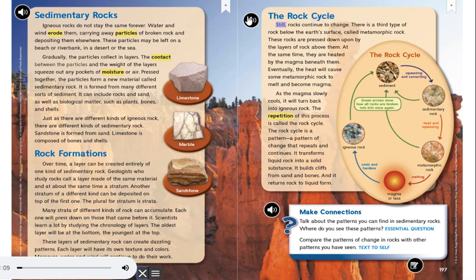The Rock Cycle. Still, rocks continue to change. There is a third type of rock below the Earth's surface, called metamorphic rock. These rocks are pressed down upon by the layers of rock above them.